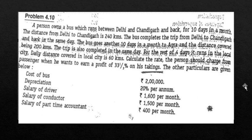Next we discuss problem 4.10. A person owns a bus which runs between Delhi and Chandigarh and back for 10 days in a month. The distance from Delhi to Chandigarh is 240 kilometers. The bus completes the trip from Delhi to Chandigarh and back in the same day. The bus goes another 10 days in a month to Agra, the distance covered being 200 kilometers, also completed in the same day.